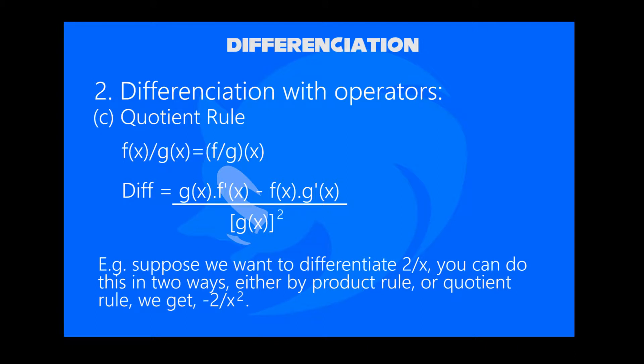For example, suppose we want to differentiate 2/x. We can do this in two ways, either by product rule or quotient rule. We get -2/x².